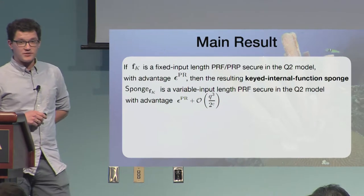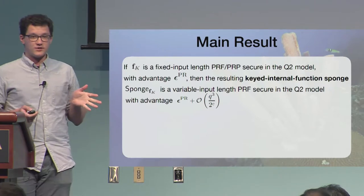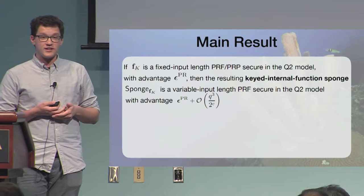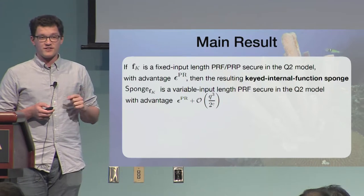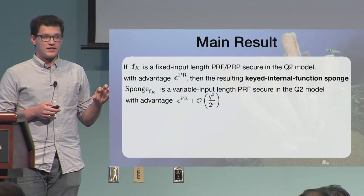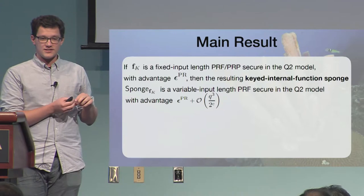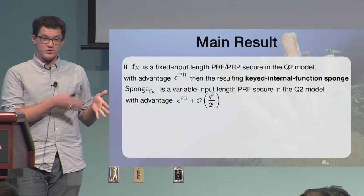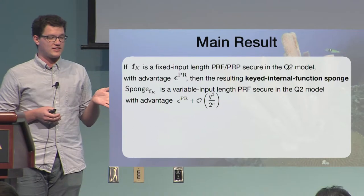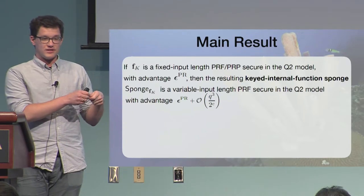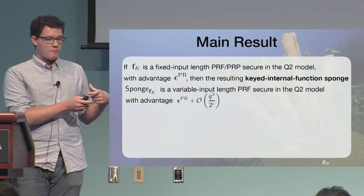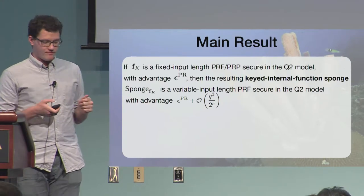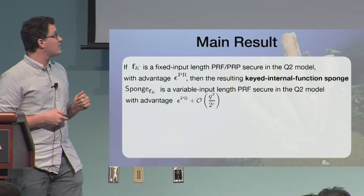This will be important later. And coming back to how we key the sponge. So those of you that know the construction and know how we key it, this is a very specific way to do it. Because sometimes the internal state is keyed. So basically, instead of starting with all zero string, we put the key there. So we start from a different place. Or we even prepend the message with the key. But here we just key the internal functions.